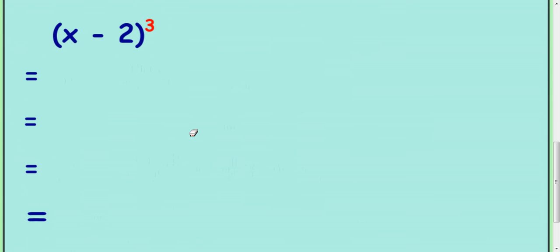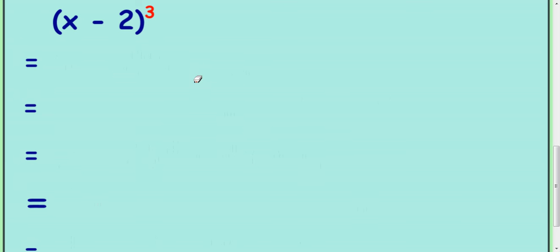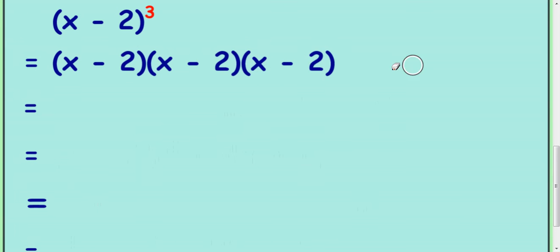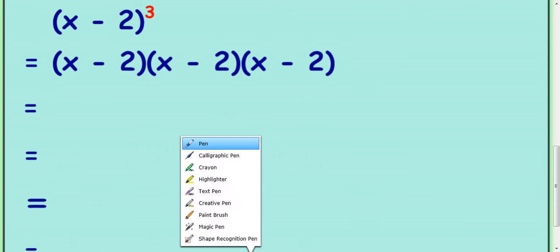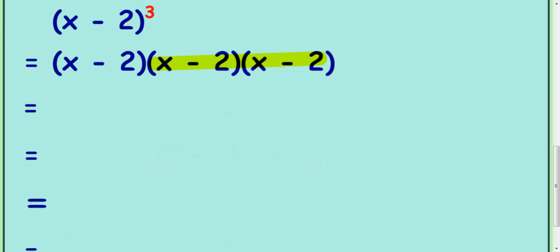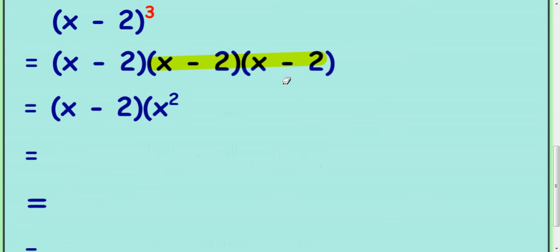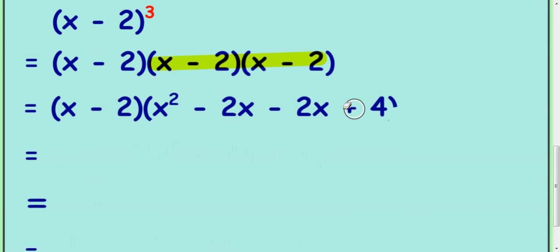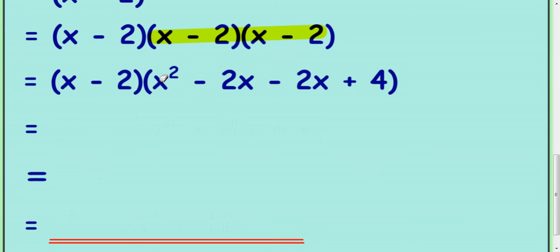Okay, let's look at another example: x take away 2 cubed. So as before, multiply it out by setting it out properly first — x take away 2 times x take away 2 times x take away 2. You're going to concentrate on the second two brackets, so rewrite the first one. Multiplying the second two brackets: x times x is x squared, x times negative 2 is negative 2x, negative 2 times x is negative 2x, and negative 2 times negative 2 is plus 4. We can simplify negative 2x take away 2x to negative 4x.